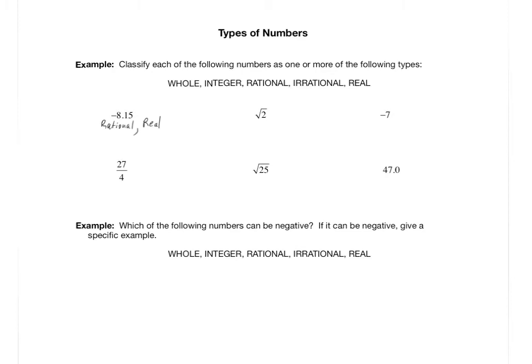How about square root of 2? Square root of 2 is certainly not whole, not an integer, and not rational. It's one of those special irrational numbers we won't deal with much in this class. It's an irrational number, and since it's irrational it's also a real number. So root 2 is an irrational real number.